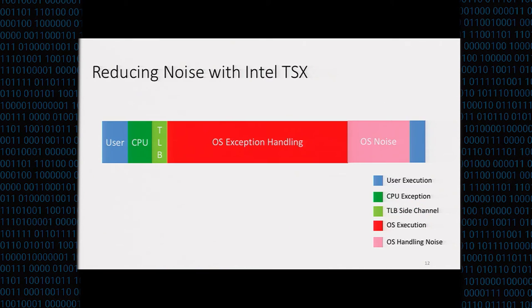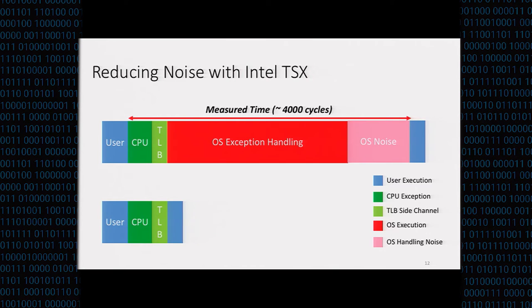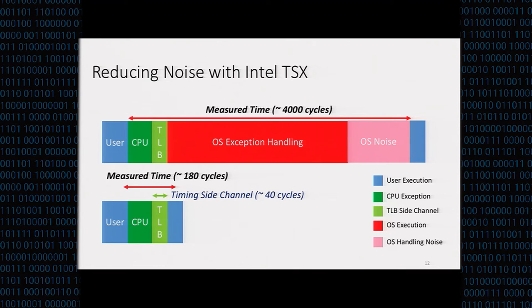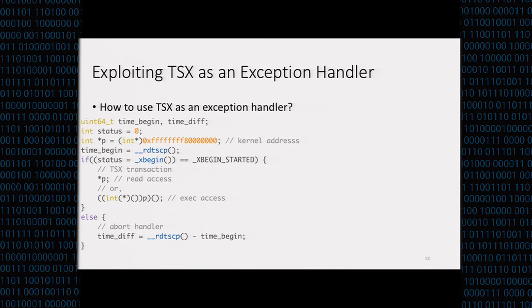Looking at the timing breakdown again: previously, the prior work measured around 4,000 cycles including the OS exception handler. But with TSX, since the operating system is not involved in the path, the measured timing is around 180 cycles, the timing side channel is around 40 cycles, and there is barely any noise.